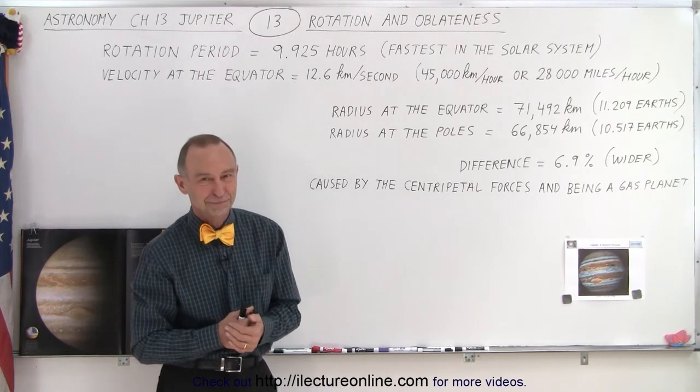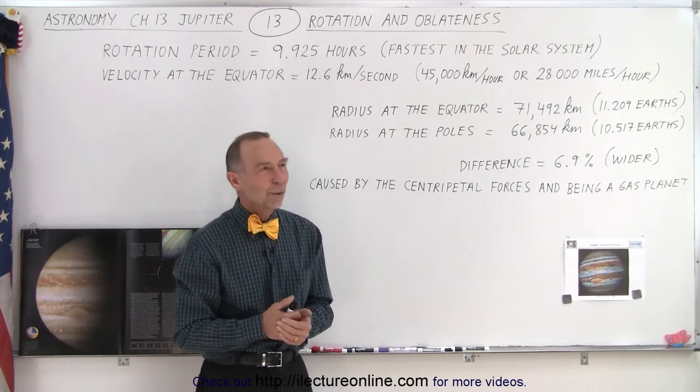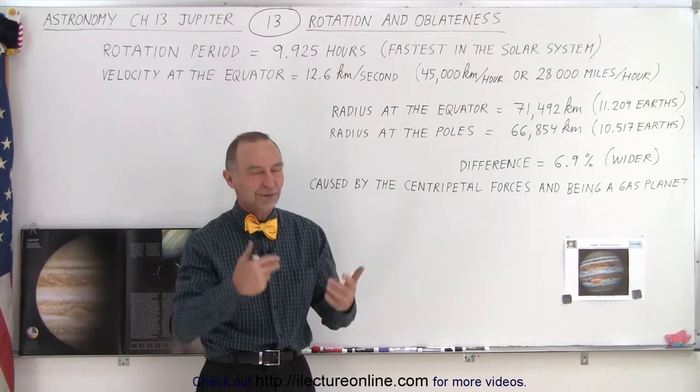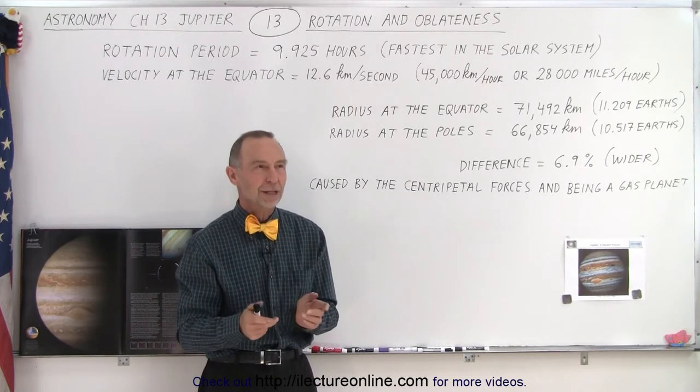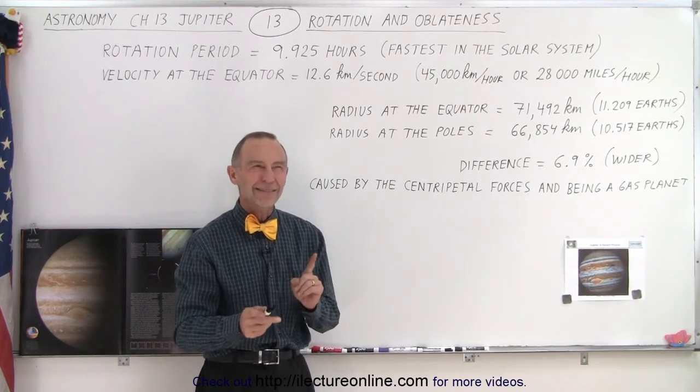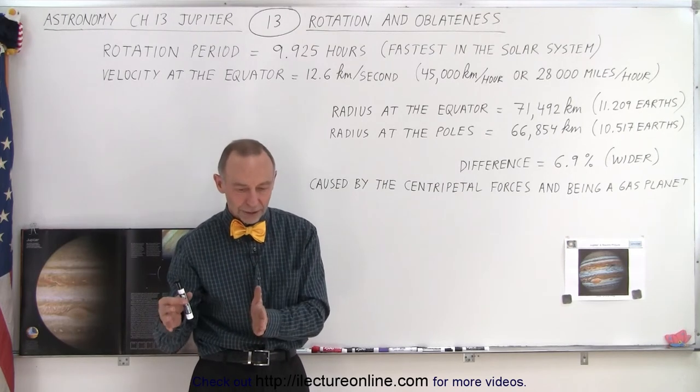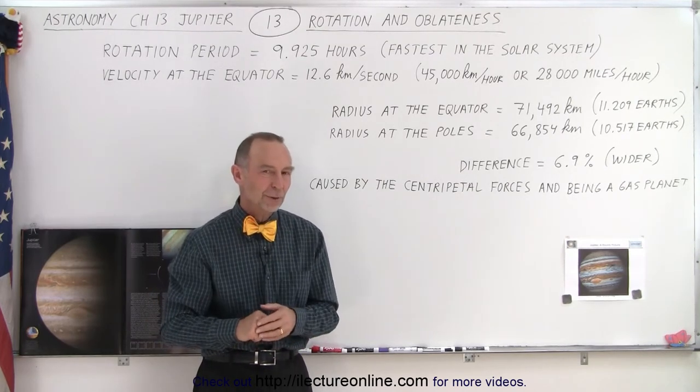So what percent is the bulging on Earth? On Earth is a small fraction of a percent. It's like .00 something. It's really, really small. So we're talking about the difference is about seven kilometers, I believe, in radius between the equator and the pole. So it's a very small quantity.